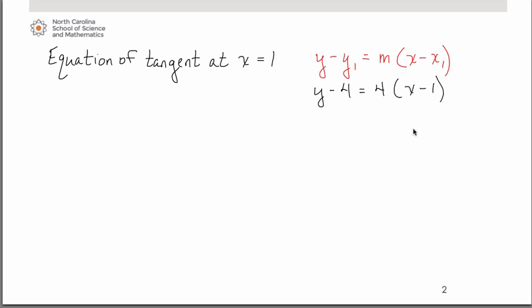times x minus 1. We can rearrange that a little bit. And we end up with simply y equals 4x, because the 4's will cancel.